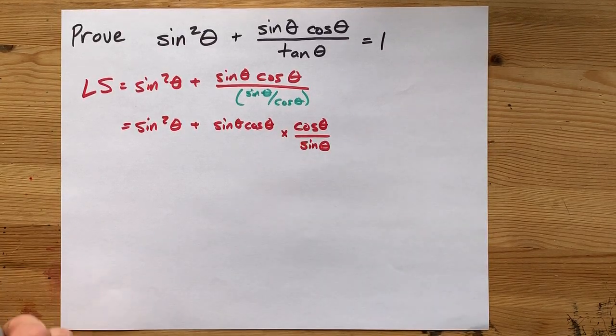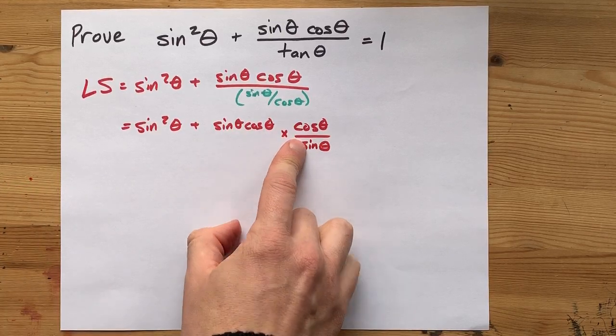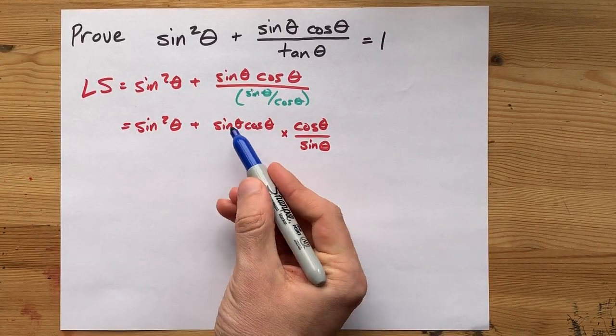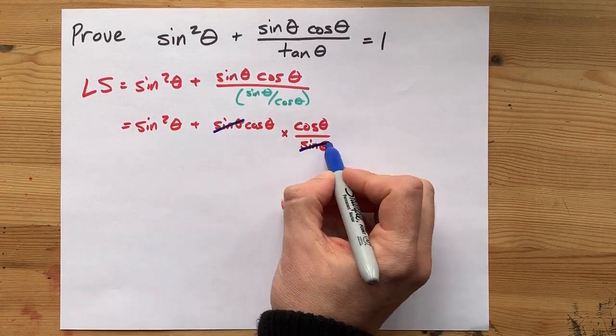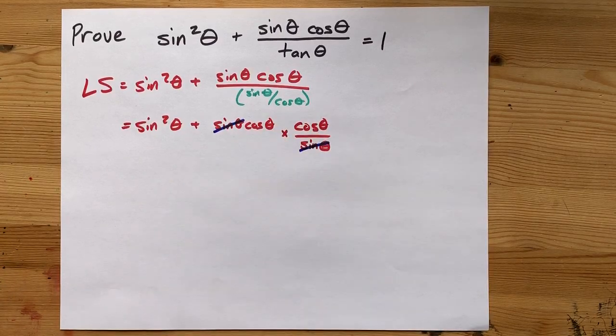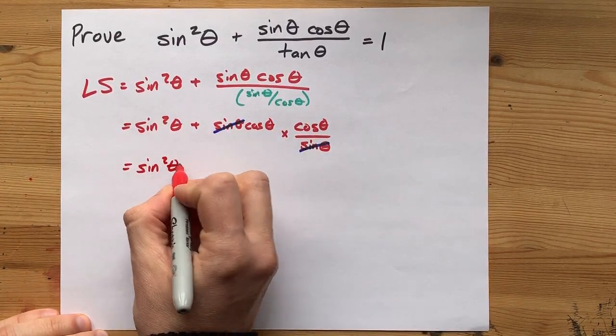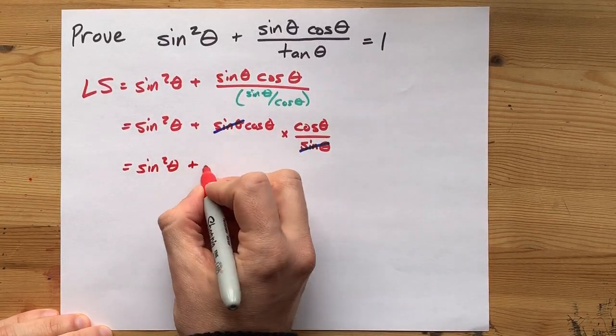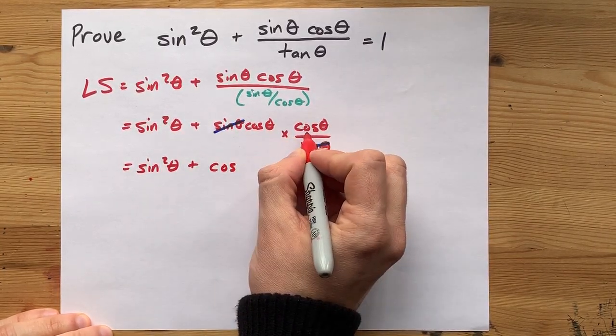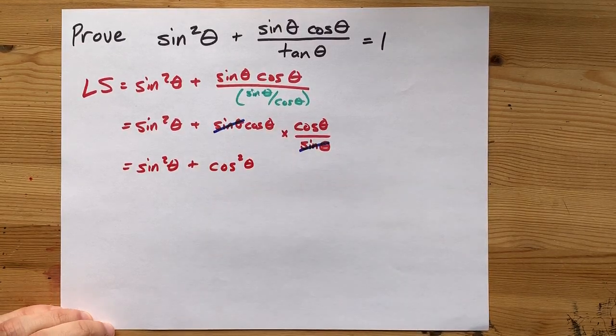You know what's great about this? You have sine times cos times cos over sine, but the timesing by sine and the dividing by sine cancel each other out. You're left with cos times cos here. And so the sine squared theta hasn't been touched. And what we have here is cos times cos. That's cos squared of that same angle theta.